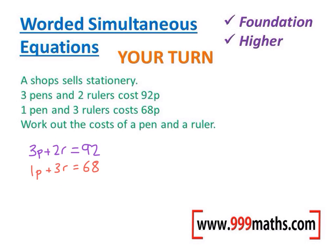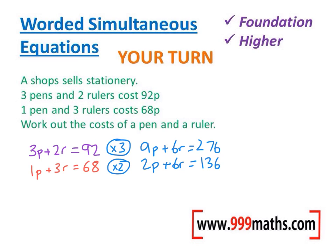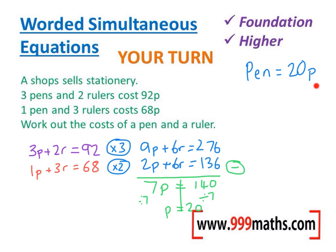The parts of the equations are not the same, so we need to multiply. I'm going to cross-multiply using the opposite numbers: since the top has 2r, I'll multiply the bottom by 2, and since the bottom has 3r, I'll multiply the top by 3. Remembering the golden rule: if the signs are the same, we subtract. Both signs are addition, so we subtract — giving 7p = 140p. Dividing by 7: P = 20, so a pen costs 20 pence.